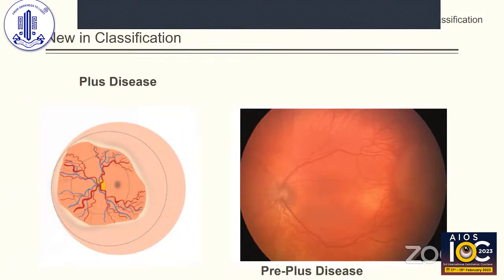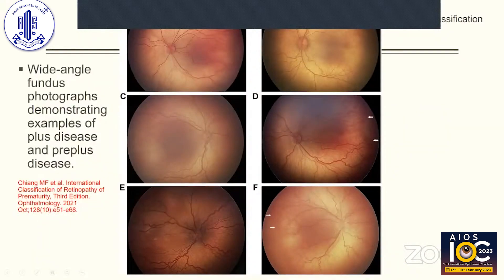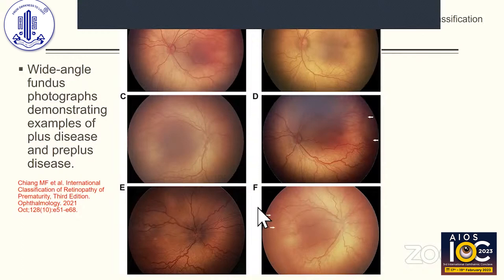The recent classification discusses plus disease and pre-plus disease in more detail. It is not easy to decide on these when encountering ROP babies. The six images from the ICROP third edition illustrate this: figures A, B, and C are graded by most researchers as not plus disease — they have some vascular tortuosity but do not meet the definition of plus disease — while figures D, E, and F represent actual plus disease, indicating severe disease.